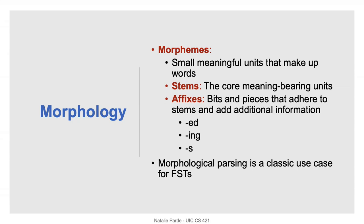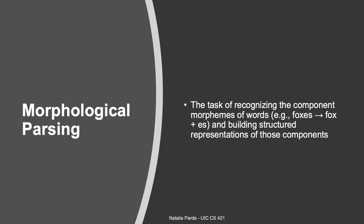One classic use case for finite state transducers is morphological parsing. Morphology is the study of morphemes, which are the small meaningful units that make up words. Some examples of morphemes are stems, which are the core units of words — for example, 'tweet' in 'tweeting' — and affixes, which are the little bits and pieces that you add onto stems to provide additional information.